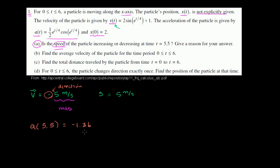We don't care so much about the actual value — what we really care about is its sign. The acceleration at t = 5.5 is negative, which tells us that the velocity is decreasing. But remember, they're not asking whether the velocity is increasing or decreasing — they're asking about speed. Acceleration is just the rate of change of velocity; if it's negative, the velocity is going down.